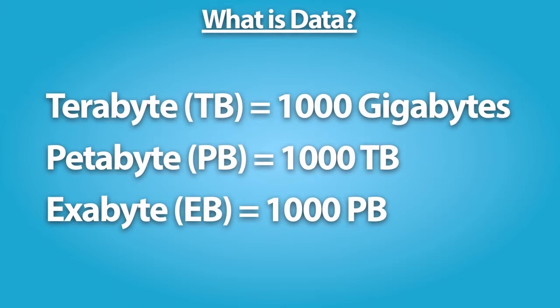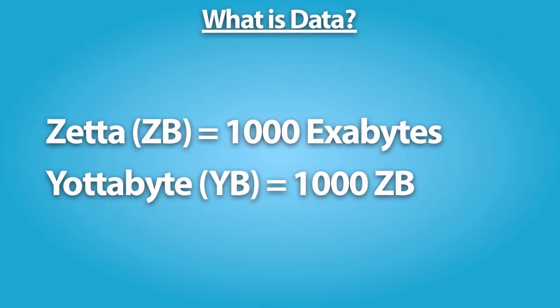A petabyte is 1,000 terabytes, which is about 20 million four-door filing cabinets or 500 million floppy disks. An exabyte is 1,000 petabytes. Five exabytes would equal all of the words ever spoken by mankind. A zettabyte is 1,000 exabytes — certainly a whole lot of ones and zeros. And finally, a yottabyte, which is 1,000 zettabytes. It is estimated the entire Internet takes up about one yottabyte.